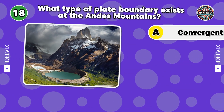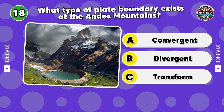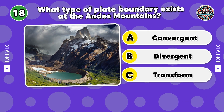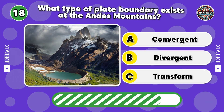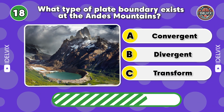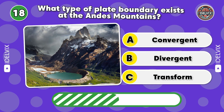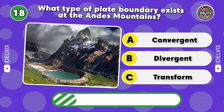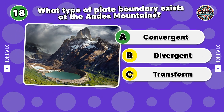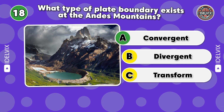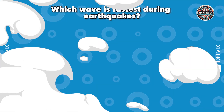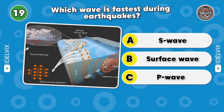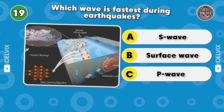18. What type of plate boundary exists at the Andes Mountains? Answer: Convergent. 19. Which wave is fastest during earthquakes?